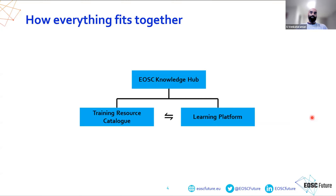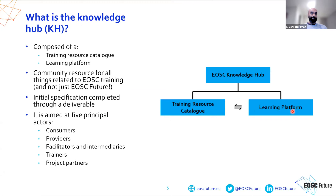How does the Knowledge Hub function and how does everything fit together? This simple diagram shows what it's all about. Essentially, the Knowledge Hub consists of two things: a training resource catalog and a learning platform — two sides of the same coin. Together they make what we call the Knowledge Hub, which will be a community resource for all things related to EOSC training — not specifically EOSC Future but the wider EOSC itself.